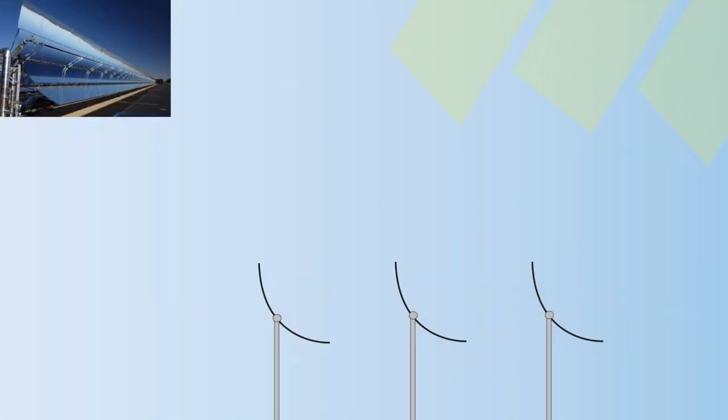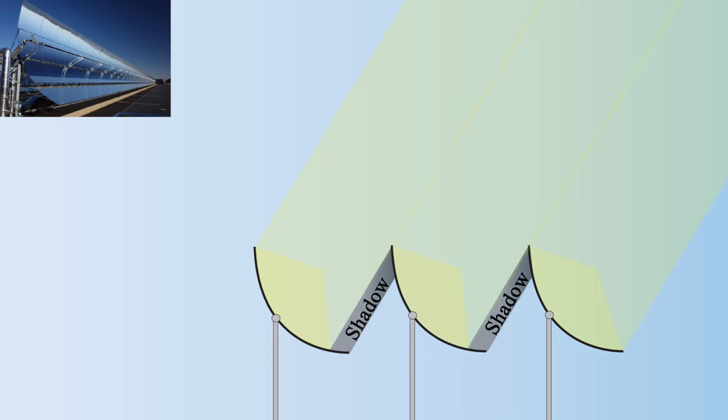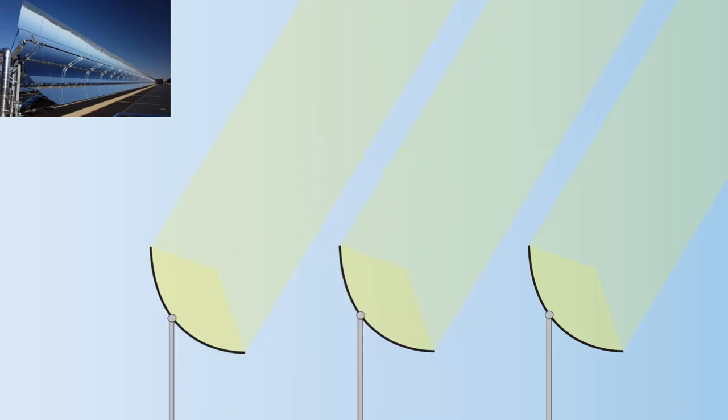Regarding a parabolic trough collector, as the collector aperture increases, the shading grows. A workaround is to set up the collectors at a greater distance from each other.